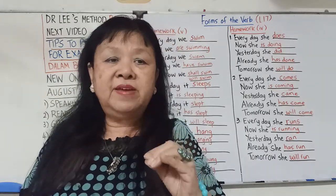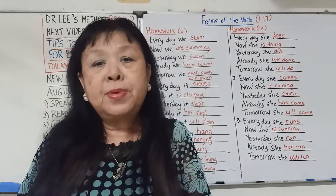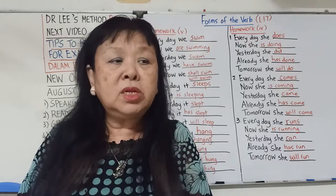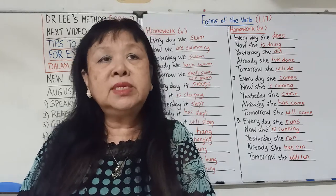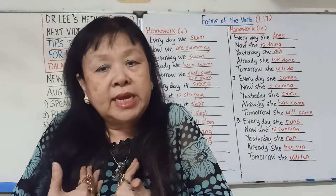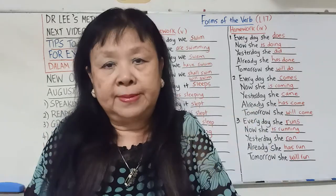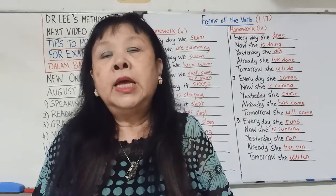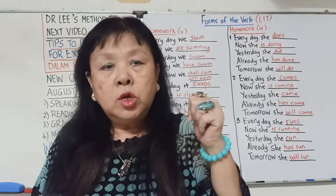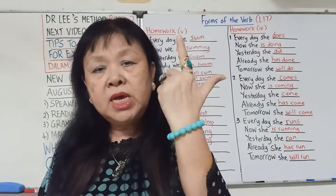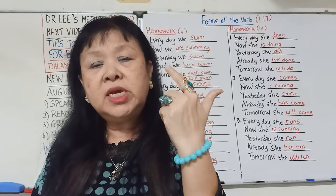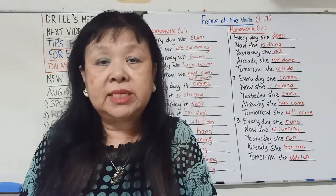Now we are swimming。Now是正在，在我们讲话的时候那个事情在发生。在语法，我们的名称是present continuous tense，就是那个事情正在发生。I就要用am，you、we和they就要用are，he、she和it我们就要用is。